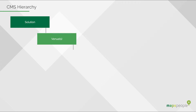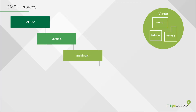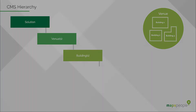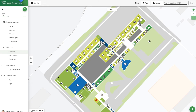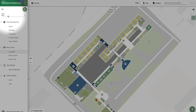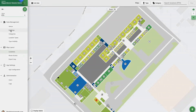Within a solution is one or more venues, and a venue contains one building or a set of buildings that are close enough geographically to be perceived as a group. As an example, a university may have one venue per campus with multiple buildings in the venue.